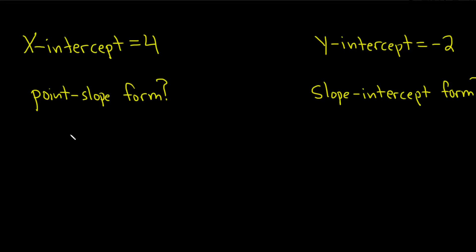In this problem, we're given the x-intercept and the y-intercept of a line, and we're asked for the point-slope form and the slope-intercept form.